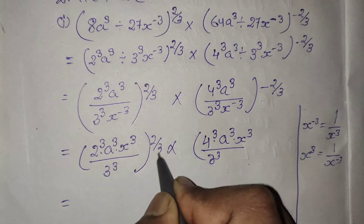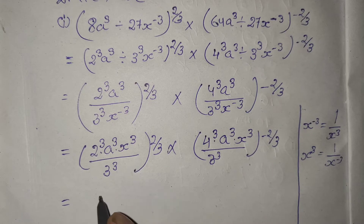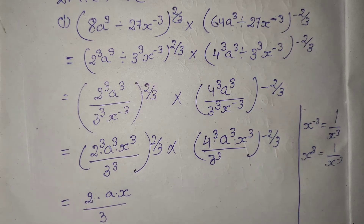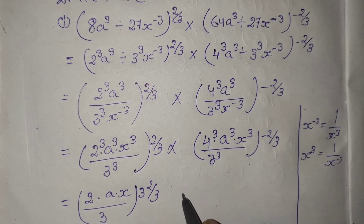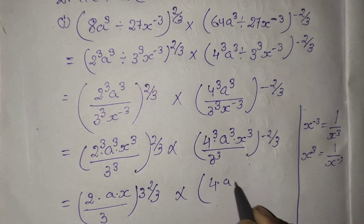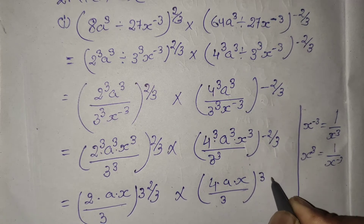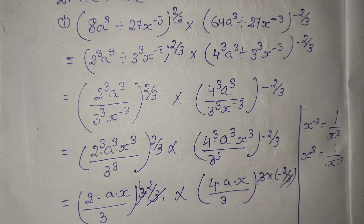After this: 2 power 2/3 and minus 2/3. Here we can see what power is common — there is 3 power common. What is left? 2, a, x and below is 3. So if I put 3 common, 2/3 will simplify. Here also there is 3 common — 4 into a into x, below is 3. And 3 into minus 2/3: here 3 cuts, here 3 cuts, one bar, here 3 cuts.